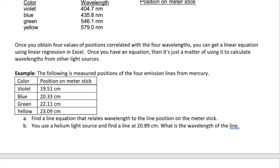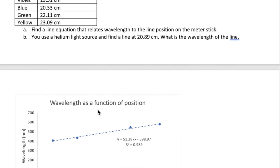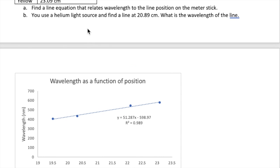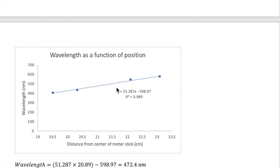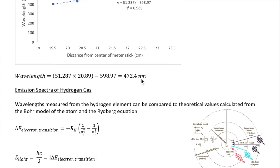Here's a quick example. Let's say you measure the distance of each line from the center of the meter stick and get these values. Plot the distance and wavelength in Excel, and you get the following line with its equation. Now, you can use the equation to convert waves from any other light source. For example, in the question, it says that you use helium and you get a line at 20.89 cm. Plugging that into the equation gives us a wavelength of 472.4 nm.